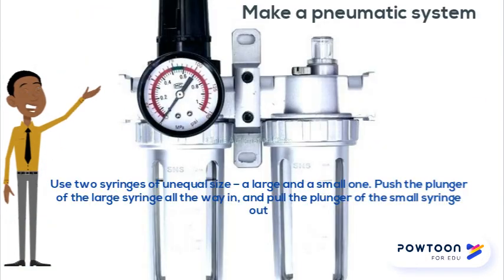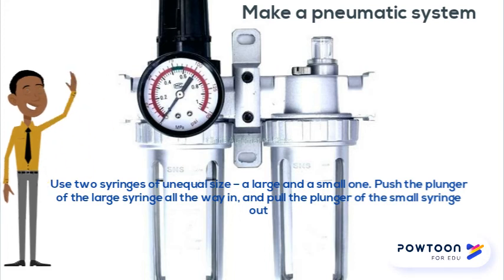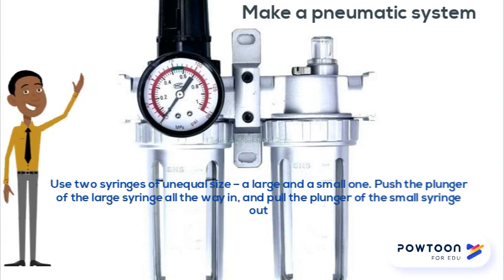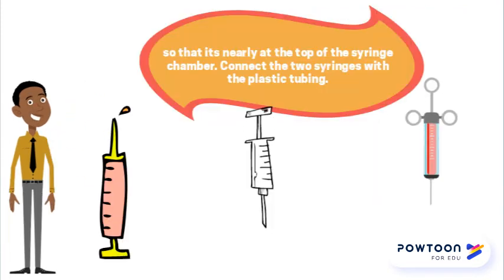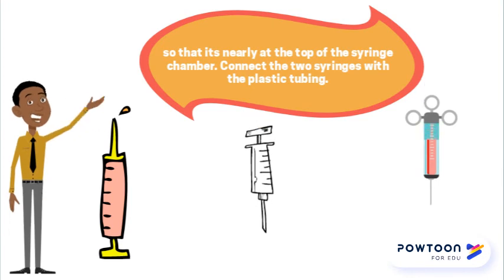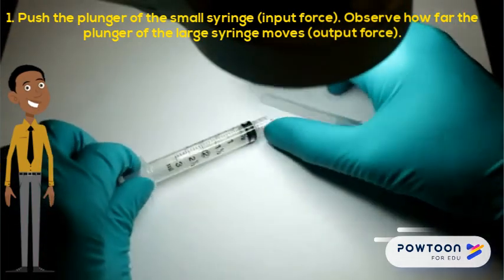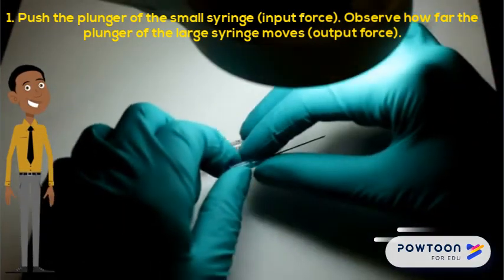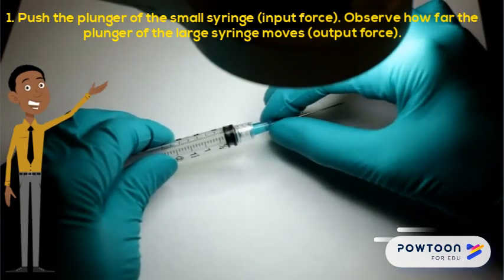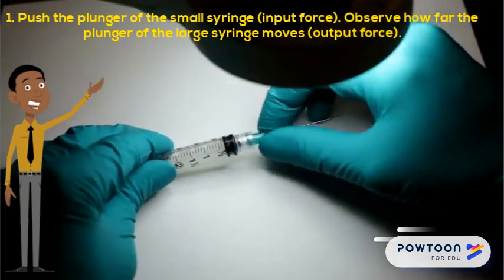Finally, let's do an investigation on the force transfer between two unequal syringes filled with water. Let's make a pneumatic system first. We use two syringes of unequal size — one large and one small. Push the plunger of the large syringe all the way in and pull the plunger of the small syringe out so that it's nearly at the top of the syringe chamber. Connect the two syringes with the plastic tubing. Push the plunger of the small syringe as the input force, and observe how far the plunger of the large syringe moves — this is the output force.